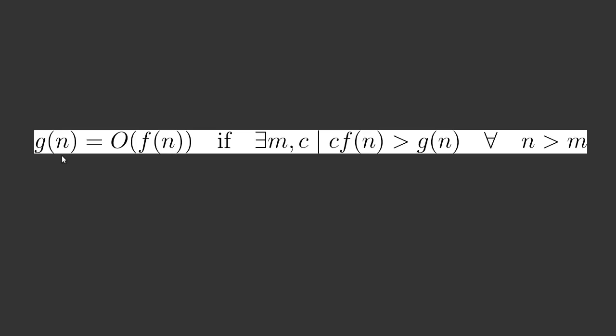We might pick one or more different operations. In the case of sorting, a standard operation to count would be the number of comparisons that you do between elements, or we could also consider the number of memory moves. You can actually get different orders for the same algorithm depending upon what operation it is that you're counting.